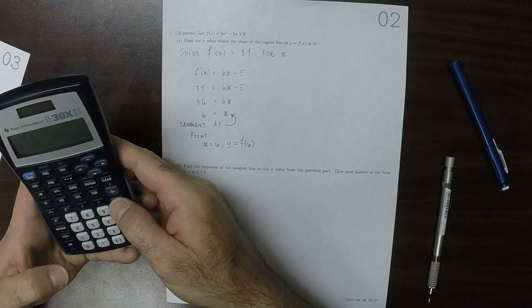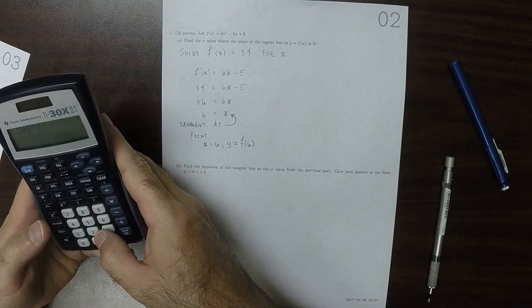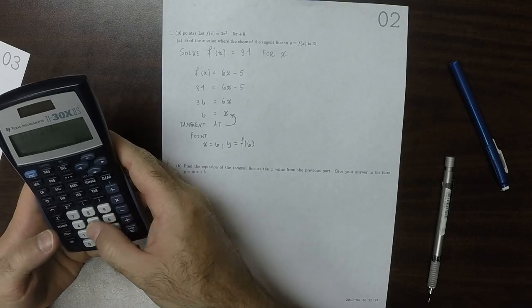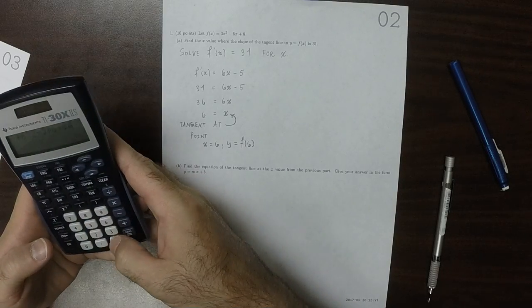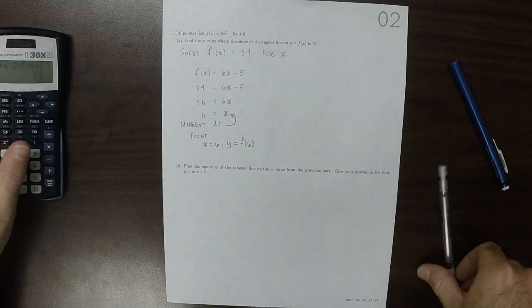So let's do that. 3 times 6 squared minus 5 times 6 plus 8... plus 86.